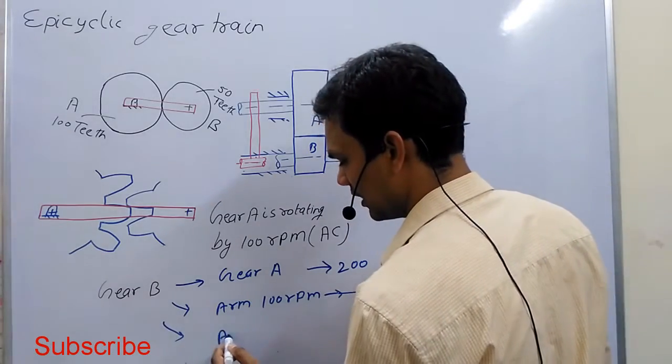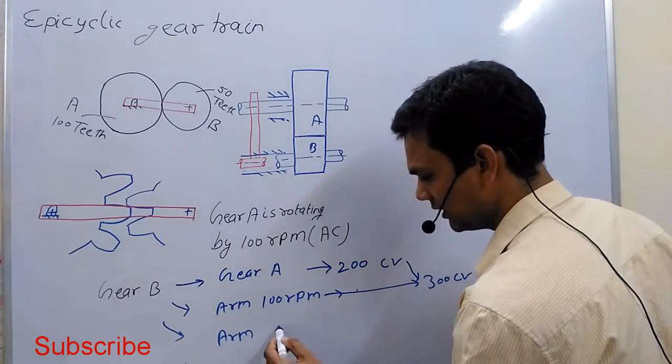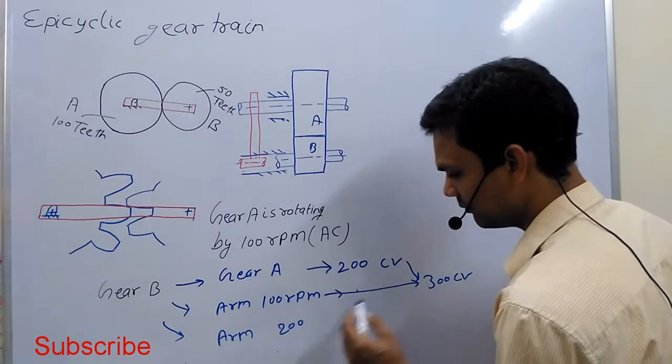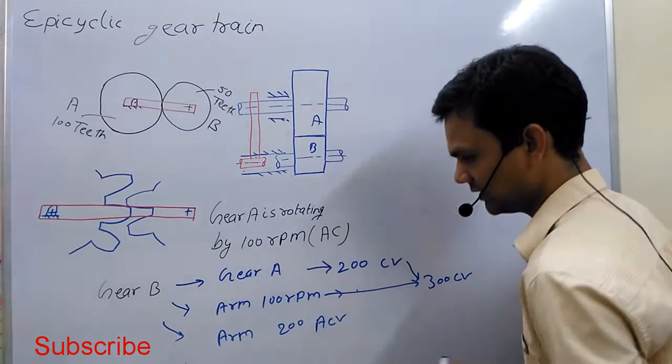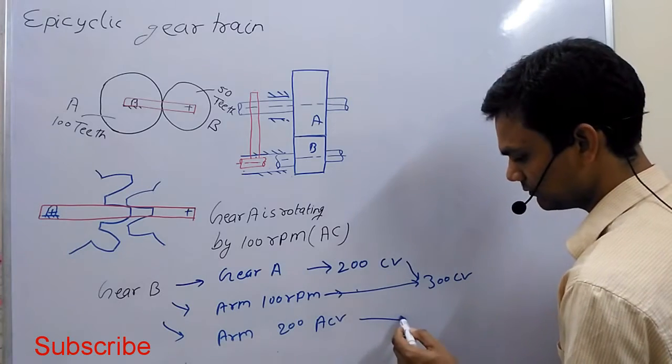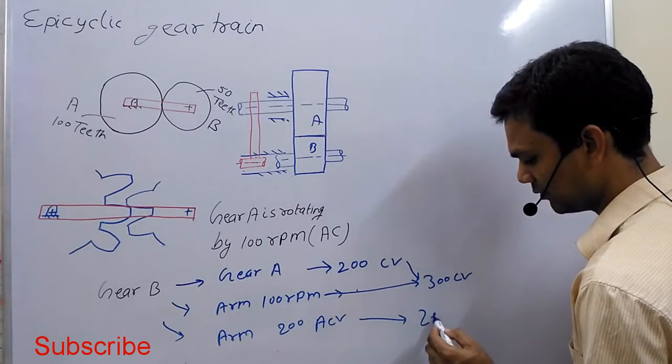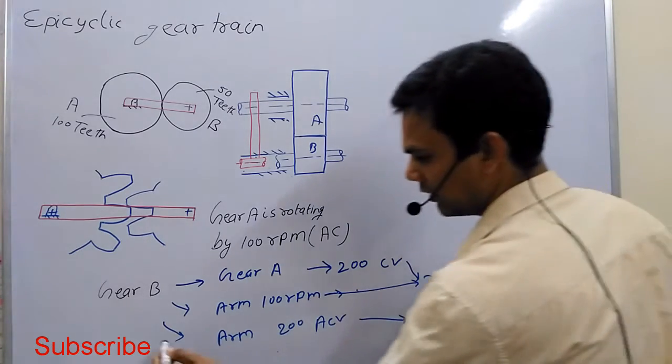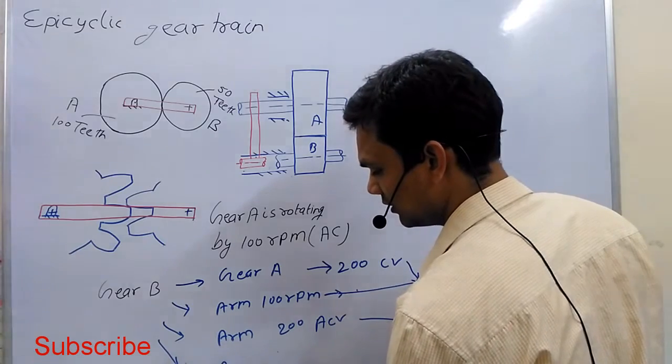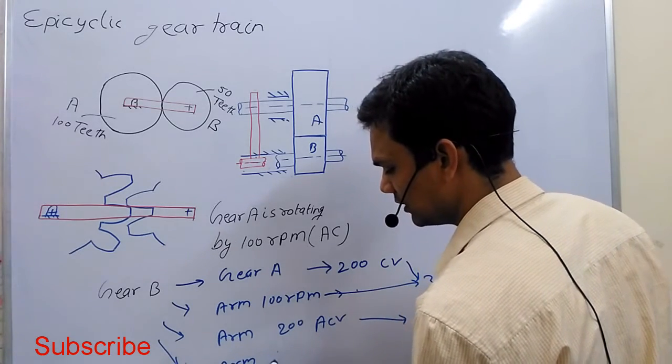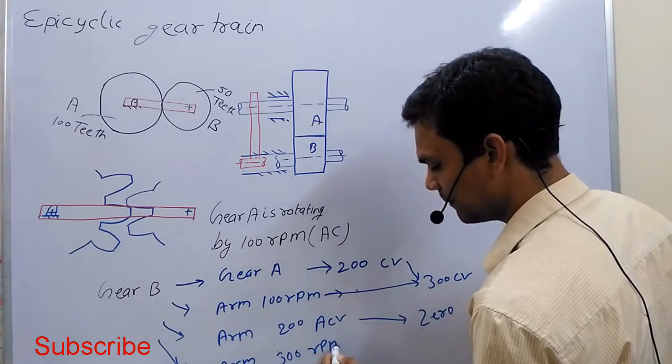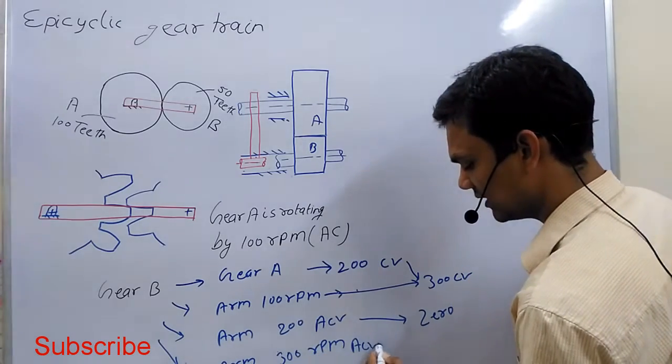If gear A is rotating at 200 rpm in a clockwise direction, then the rpm of the gear is zero. Now if the arm is rotating at 300 rpm in clockwise direction.